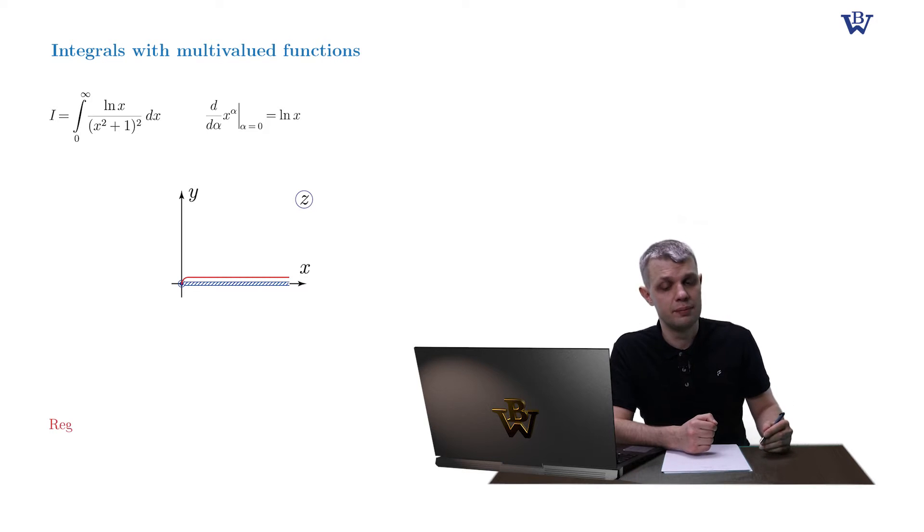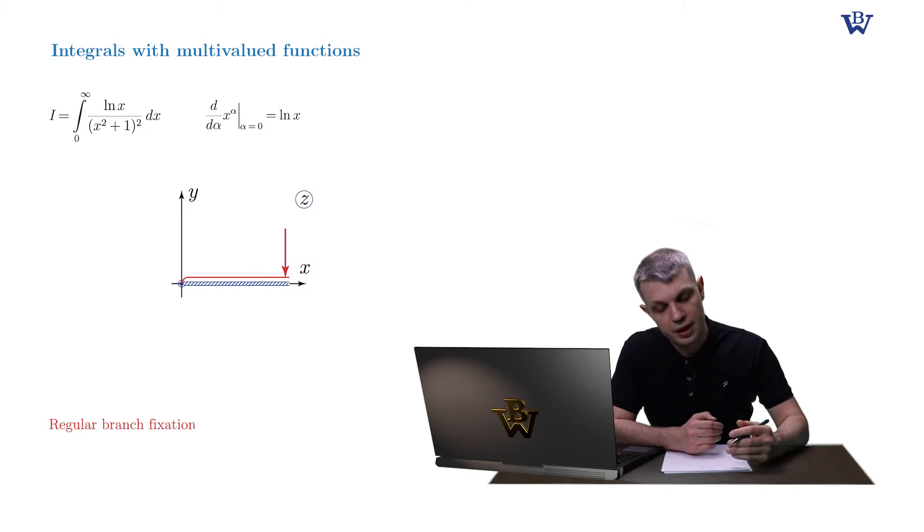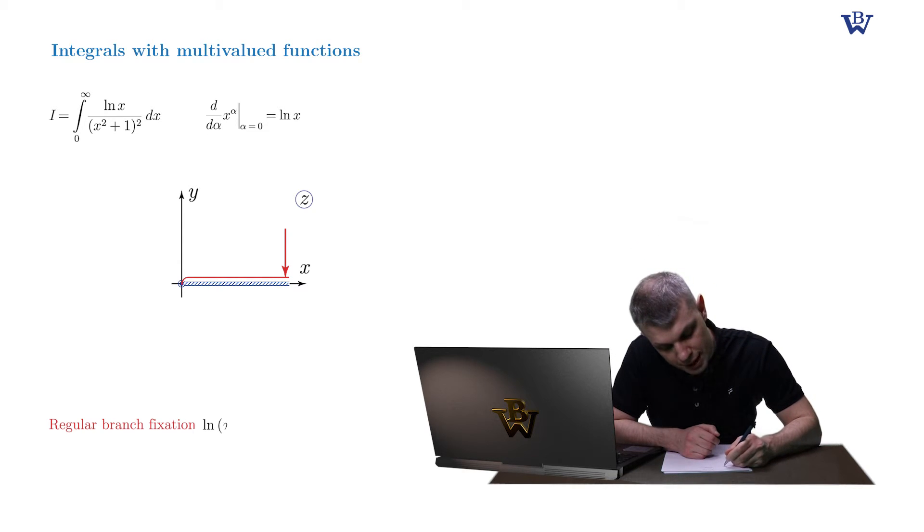This, as you probably remember, means the automatic fixation of a regular branch of our multi-valued log function. Namely, we equate the original integral with the integral running along the upper bank of the branch cut. But that means that we imply that our log function assumes its arithmetic value on the upper bank of the branch cut. So the rigorous condition: logarithm of (x plus i0) assumes real values for positive x.